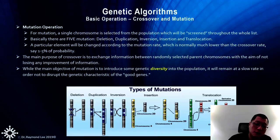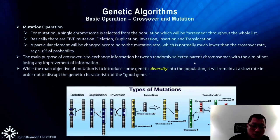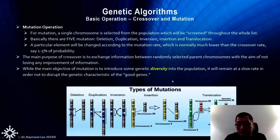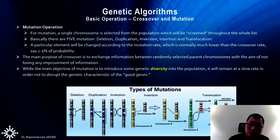In the overall theory for mutation, we have five different processes: deletion, duplication, inversion, insertion, and translocation. You can study those in detail if you do ongoing research on genetic algorithm mutation. Genetic algorithm has now become very popular in terms of system optimization for AI systems.